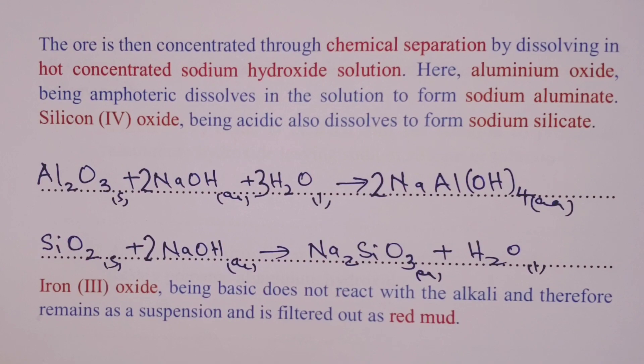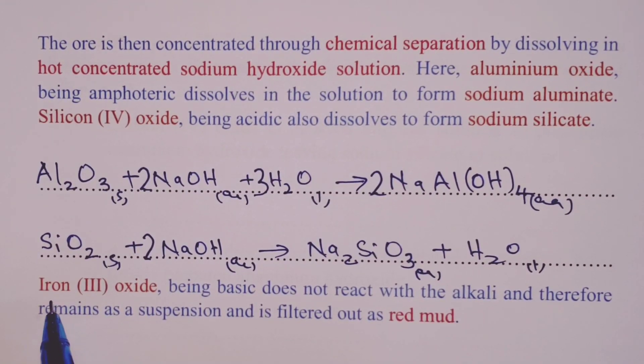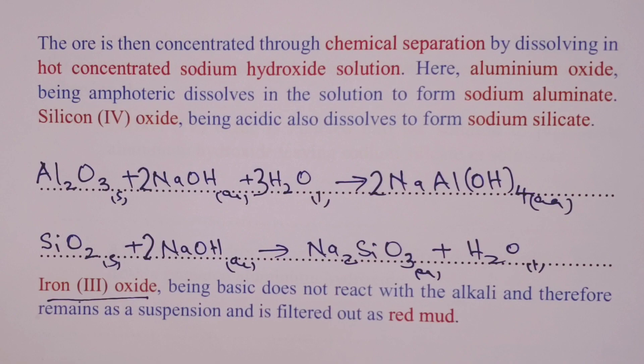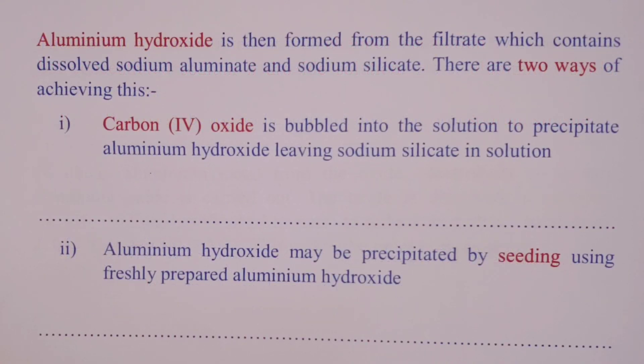Now the other impurity, which is iron (III) oxide, it is basic and therefore will not react with our sodium hydroxide. So it remains as a suspension and can be filtered out in form of red mud. After filtering out iron (III) oxide,